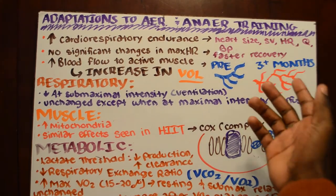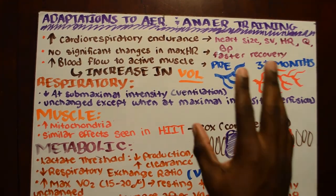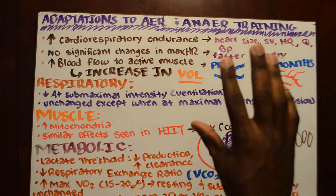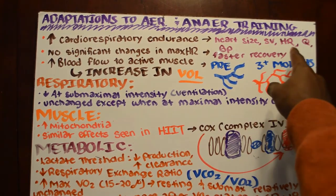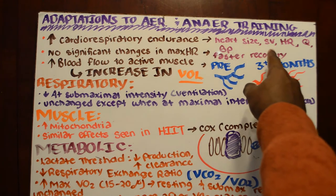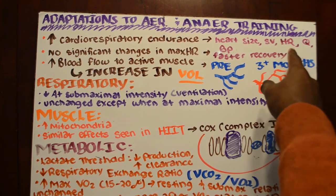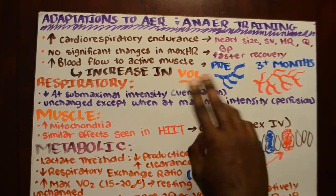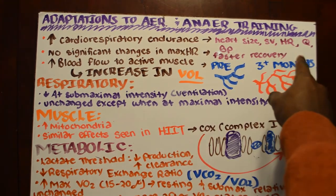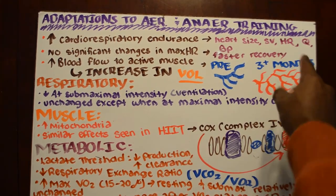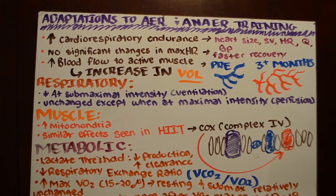As stroke volume goes up and heart size increases, even if our heart rate stays steady, we know that the equation for cardiac output is stroke volume times heart rate. So if stroke volume goes up and heart rate stays the same, the value increases — meaning we have a greater cardiac output (Q). So stroke volume goes up, heart rate increases as you exercise, and cardiac output increases.